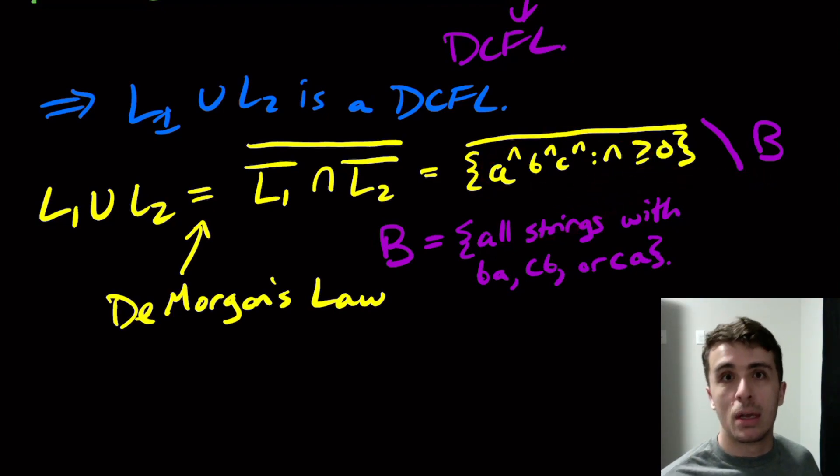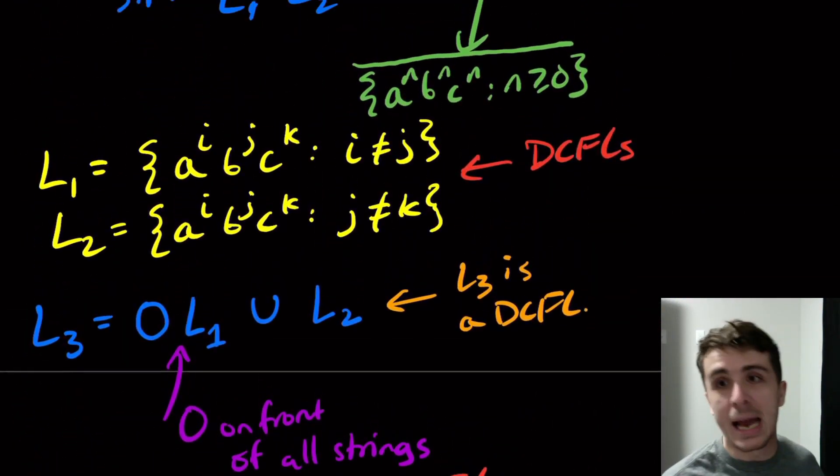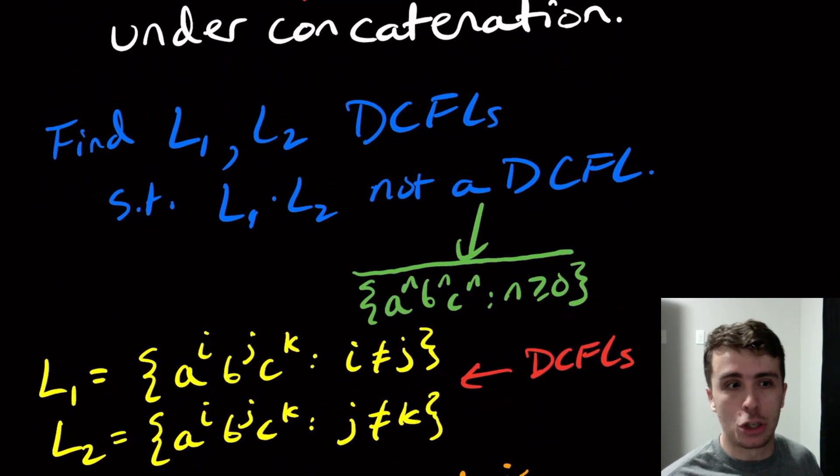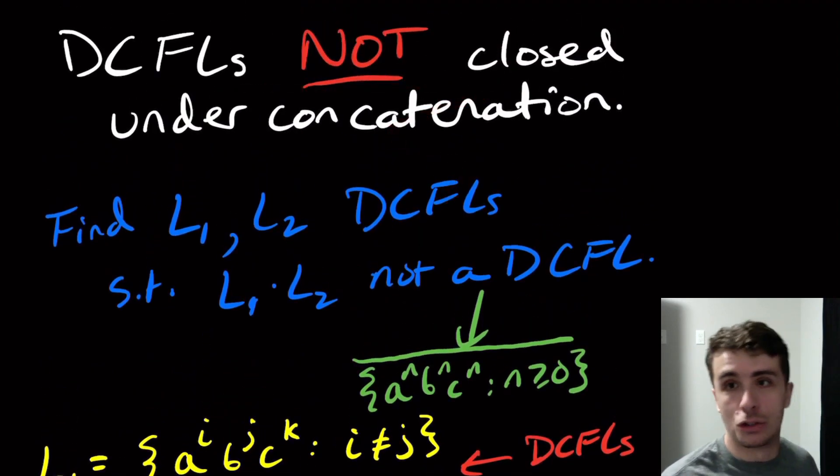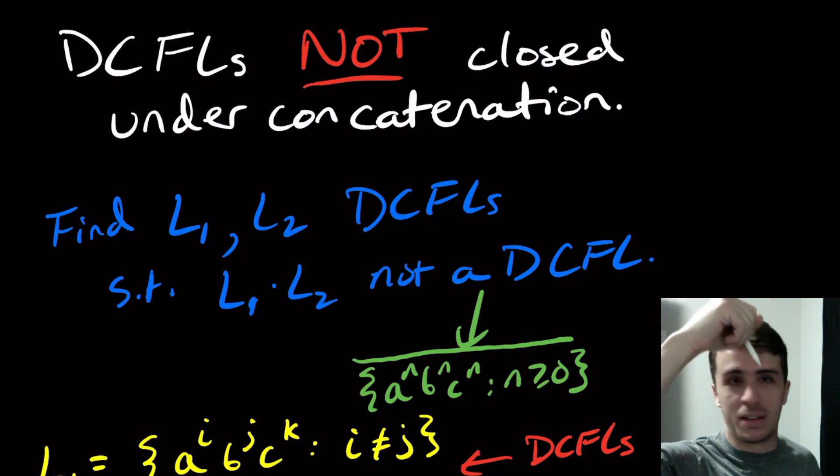So that shows that DCFLs are in fact not closed under concatenation, through a pretty roundabout way. But this actually shows that DCFLs are in fact not closed under concatenation. So hopefully that was interesting. Leave your thoughts about this proof, about DCFLs, and the fact that they're not closed under pretty much anything. As always, please like and subscribe to the channel. It really helps us out. There are many other links down in the description if you want to support this channel further. And as always, thanks for watching, and I'll see you next time.